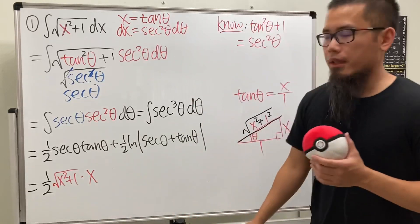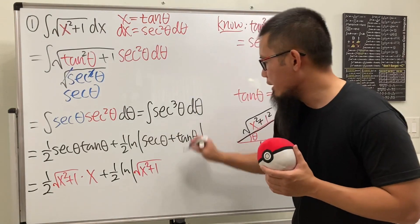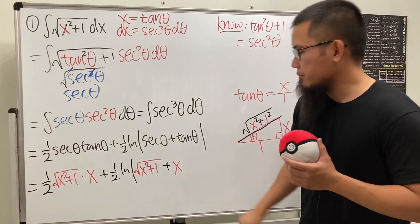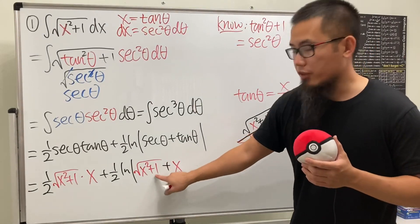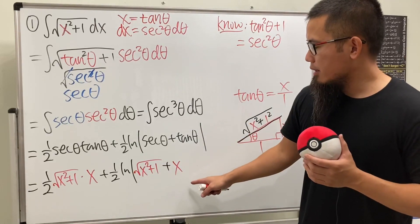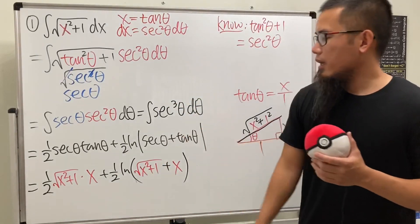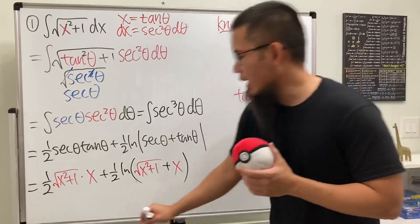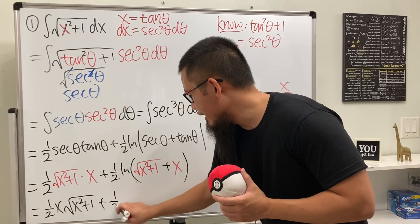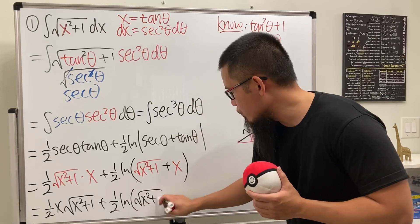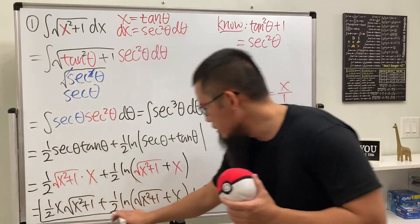So the answer becomes: one half times √(x² + 1) times x, plus one half ln(√(x² + 1) + x). Notice the inside of the log is always positive because of the plus one, so we can drop the absolute value and use parentheses. Rearranging with x in front: (1/2)x√(x² + 1) + (1/2)ln(√(x² + 1) + x) + C.